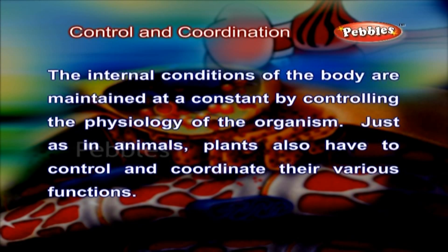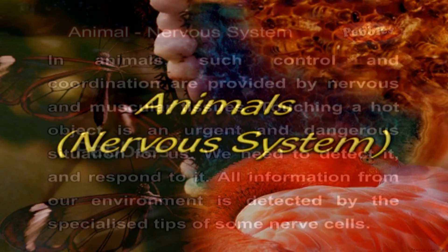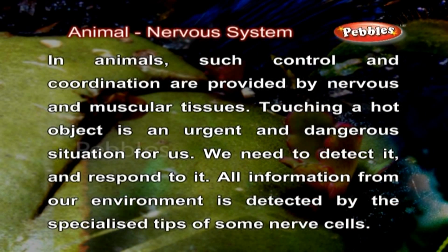Just as in animals, plants also have to control and coordinate their various functions. In animals, such control and coordination are provided by nervous and muscular tissues.